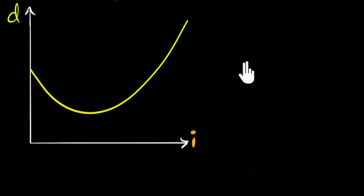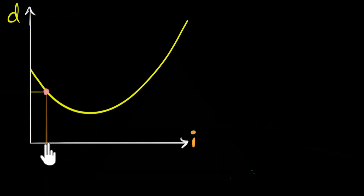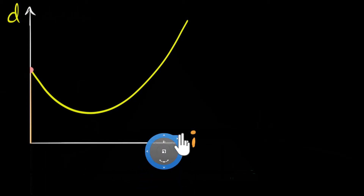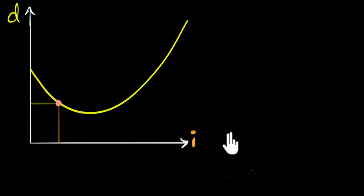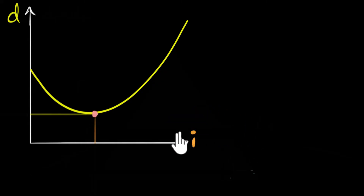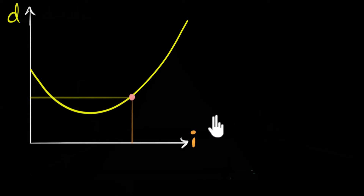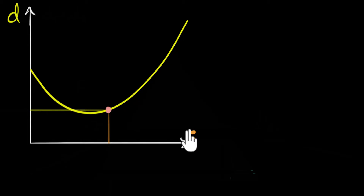Looking at the graph carefully, as we start from zero angle of incidence, D has some value. As we increase the angle of incidence, the angle of deviation starts decreasing — it decreases, decreases, decreases — hits a minimum value, and then further increasing the angle of incidence, the deviation starts increasing again. This is the key takeaway of the entire video: the angle of deviation has a minimum value.